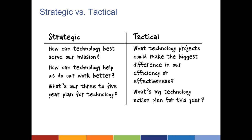We'll be talking mostly today about the tactical side of planning. Strategic technology planning asks how technology can best serve our mission, while tactical technology planning asks what specific things can help us become more efficient or more effective — it's innovation versus optimization. A strategic technology plan might have a three-to-five-year timeline, whereas a tactical plan focuses on the near term: what can we accomplish in the next 12 months, or within our current budget year, to help optimize our systems?